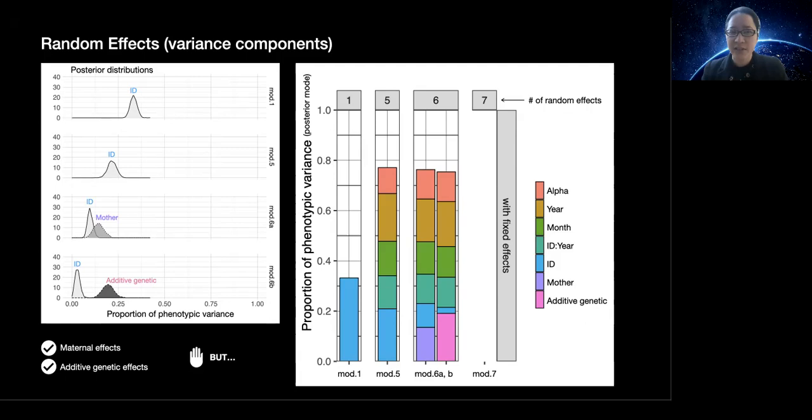For that reason, it's important, when possible, to account for both within the same model. Indeed, we get lower estimates for both maternal and additive genetic effects when they're measured in the same model.